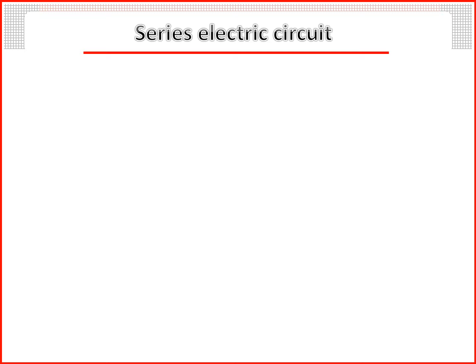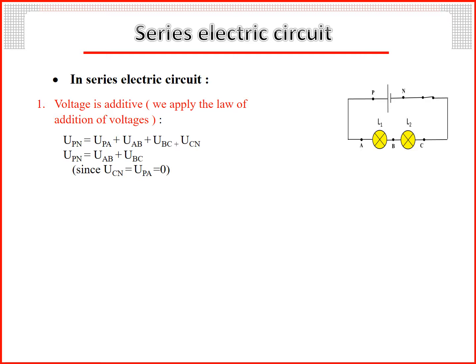Series electric circuit. In series electric circuit, voltage is additive. We apply the law of addition of voltages: UPN = UPA + UAB + UBC + UCN. UPN = UAB + UBC since UCN = UPA = 0. UPN = U1 + U2.